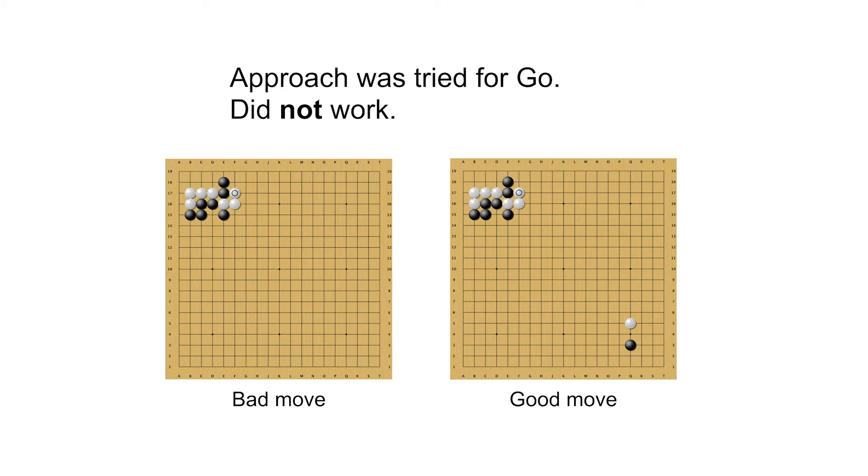We can see on the slide a really extreme example of this. Go has what are called non-local effects. In the upper left hand corner, it's the exact same shape with white making the exact same move. But for reasons that are complicated to explain right now, on the left hand board position this is a really bad move to make. But if white has this one additional stone in the opposite corner of the board, all of a sudden this move is a really good move to make. You can see these kinds of positions make it very difficult to encode a value function.